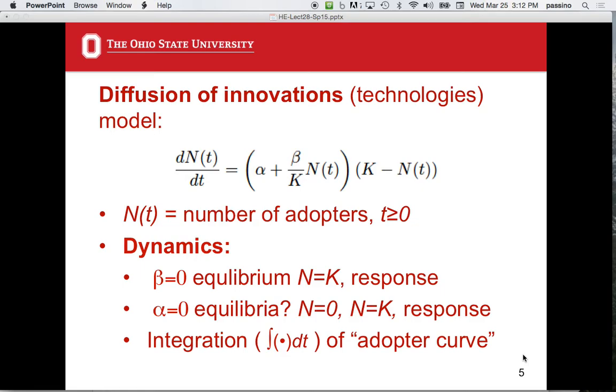Solve for n. The right-hand side is solve for n. Beta is a constant, K is a constant. I've got n times quantity K minus n. I don't want to solve for n. It's quadratic, but it's a little easier because it's already factored. So n of t is equal to zero—n equals zero is one case. N of t is equal to K is the second case.